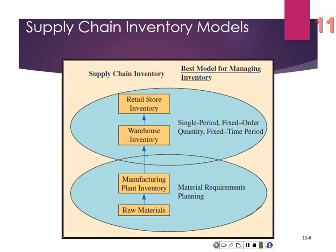The single period model is called the news vendor problem because it's like a newspaper: how many papers do you produce for tomorrow's sales? If you underproduce, you miss profit; if you overproduce, they have little or no value the next day. This applies to newspapers, Halloween costumes, fresh fruits and vegetables — things with a shelf life. That's the single period news vendor problem.